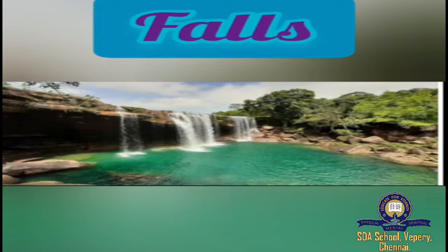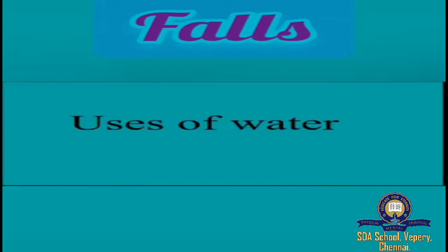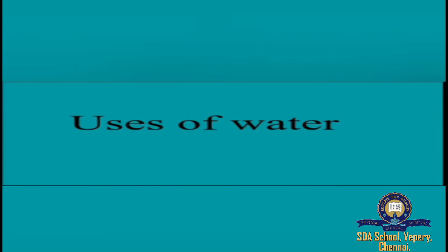Children, we have now learnt about rain, well, lake, stream, river, sea, dam, and falls. These are a few of the sources of water. If you want to know further, you will learn more in your higher classes. These are some of the sources of water. Now we are going to learn how we use this water — for what purposes we use water. You will drink, you will wash clothes, you will clean your space, and many other things.